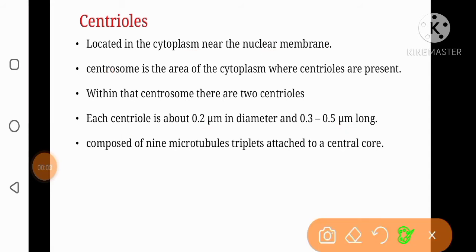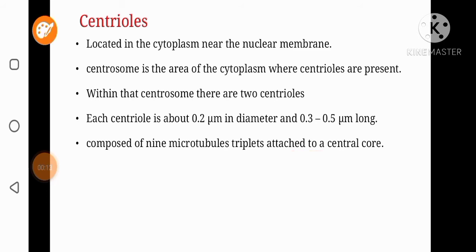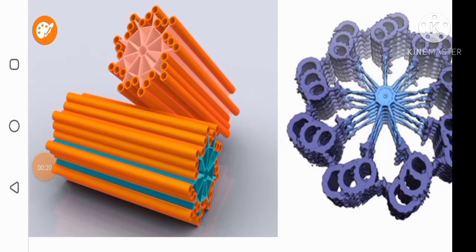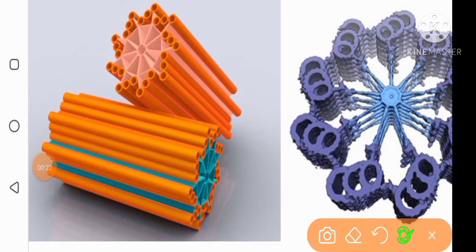Each centriole is composed of nine microtubule triplets attached to a central core, forming a sort of cartwheel-like structure. In this diagram you can see the pair of centrioles. If we look into the details of one centriole, this rod-like structure is